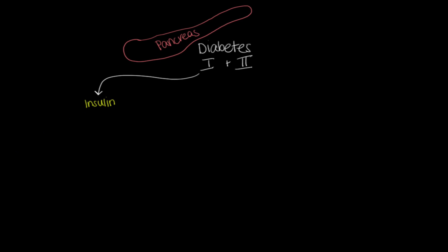If we start with diabetes type 1, essentially what happens is that our pancreas does not produce insulin — we're not producing the insulin that our body needs. And why do we need insulin? We need insulin to help the cells use glucose for energy. Insulin kind of acts like a key. Here's our cell and here's our keyhole — this is where the insulin should go. When the insulin gets into that keyhole, it's going to open up our cell in order for the sugar or glucose to make its way in so that our body can use that glucose for energy.